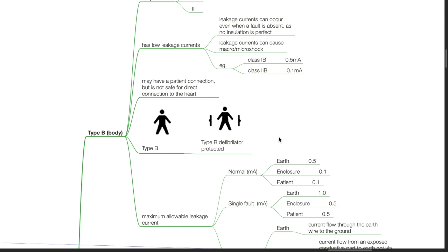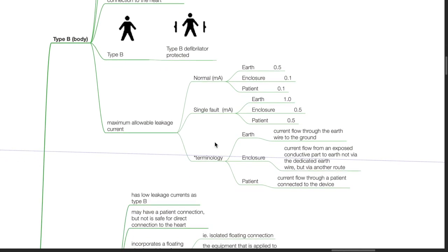Type B equipment may have a patient connection but is not safe for direct connection to the heart. These are the symbols for type B and type B defibrillator-protected equipment. Maximum allowable leakage current terminology: Earth refers to current flow through the earth wire to ground. Enclosure refers to current flow from an exposed conductive part to earth, not via the dedicated earth wire. Patient refers to current flow through a patient connected to the device. At normal conditions: Earth 0.5, enclosure 0.1, patient 0.1 milliamps. During a single fault: Earth 1.0, enclosure 0.5, patient 0.5 milliamps.